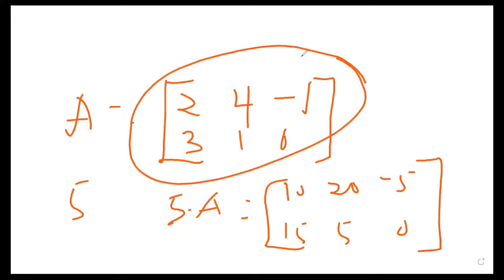Scalar multiplication is very easy — multiply the scalar to any given matrix. The next operation is addition of matrices. Addition means that given two or three or four matrices, you are asked to add them together. But there is a caveat which is very important.